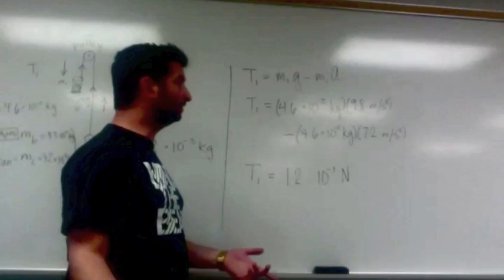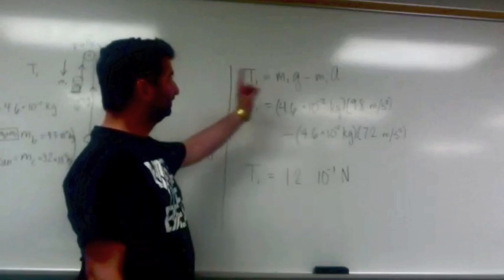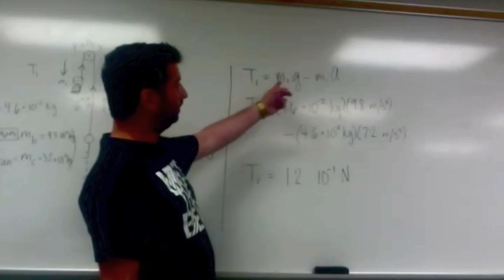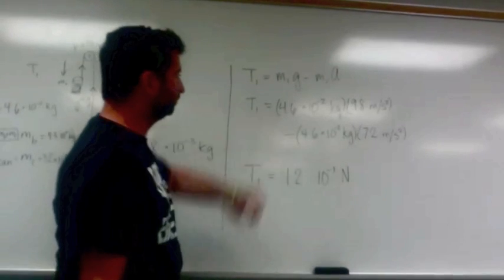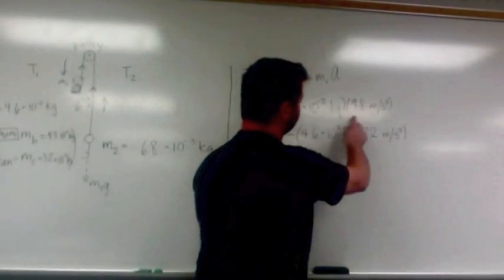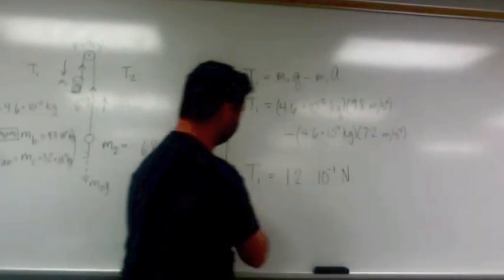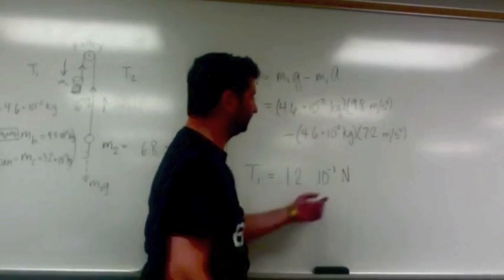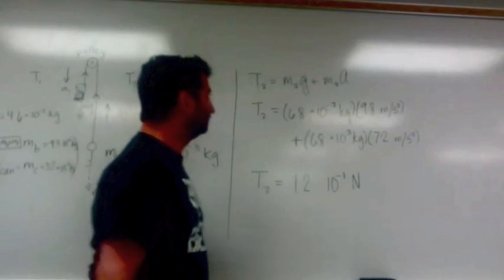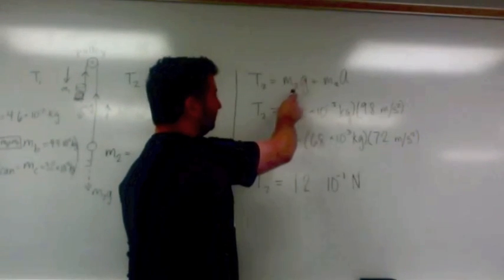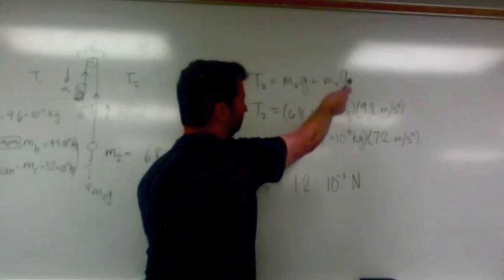For the tension force, we have m1 times g minus m1 times a. We're looking to get tension force. Plug in all the numbers that we know, and the first tension force equals 1.2 times 10 to the negative 1 Newtons.